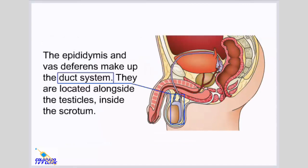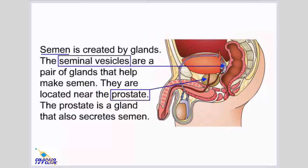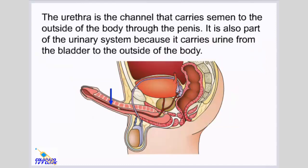The epididymis and vas deferens make up the duct system and are located alongside the testicles inside the scrotum. Semen is created by glands. The seminal vesicles are a pair of glands that help make semen and are located near the prostate. The prostate is a gland that also secretes semen. The urethra is the channel that carries semen to the outside of the body through the penis, and also carries urine from the bladder to the outside of the body.